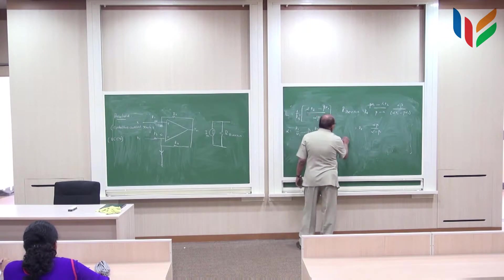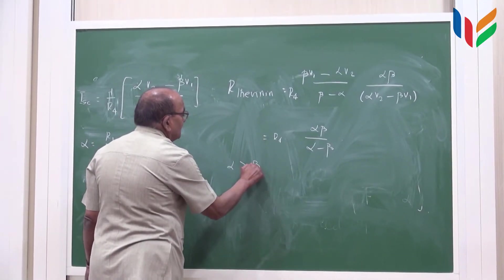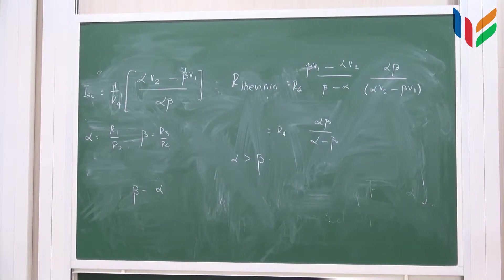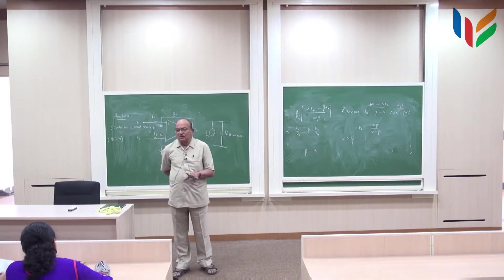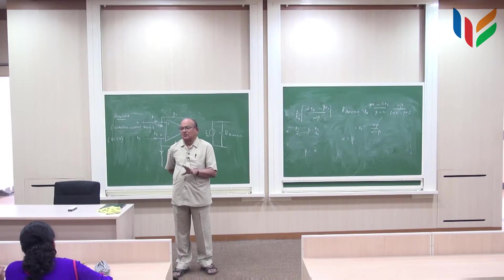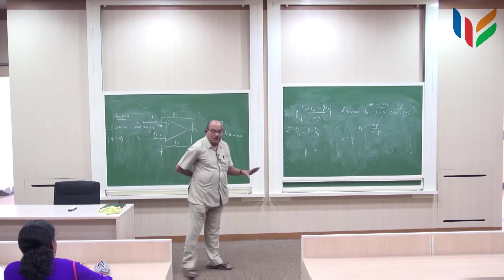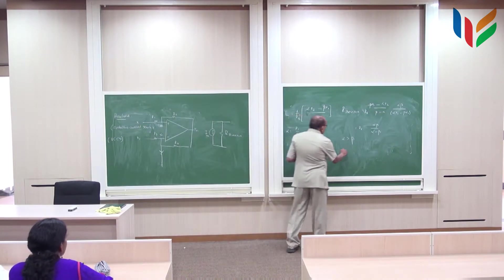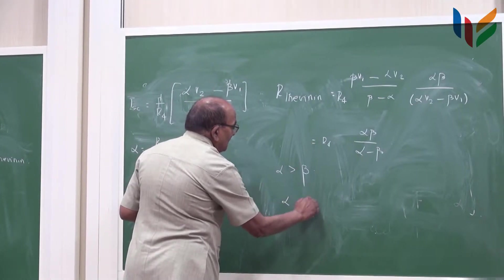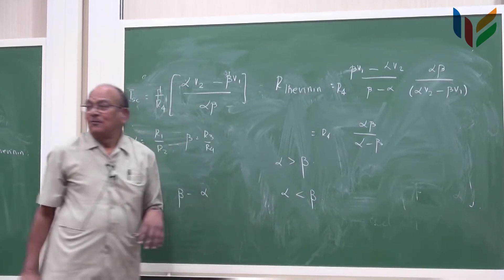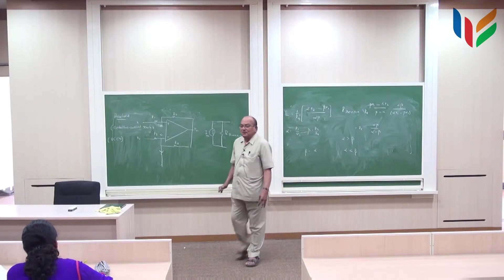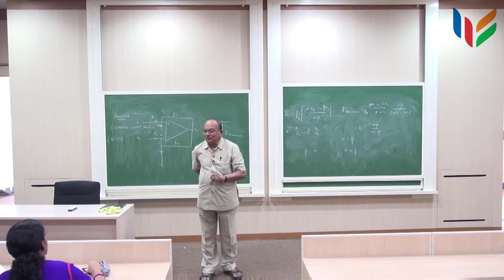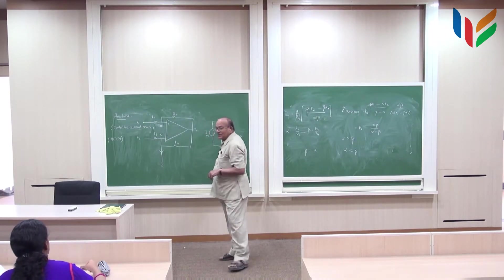If alpha is greater than beta then the current source will have positive resistance, which will be a non-ideal current source. If alpha is less than beta what happens? Then at those terminals you have a negative resistance here.